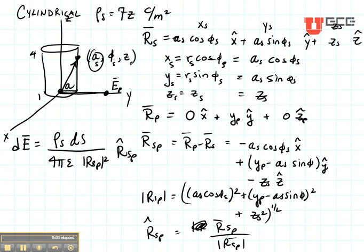Now let's finish our evaluation of what would happen with a cylindrical coordinate system. Let's start putting our pieces together. If I want to find my electric field, I'm going to be doing a surface integral. And my ρS is 7Z.